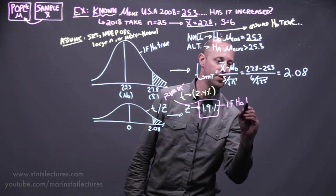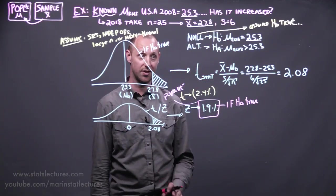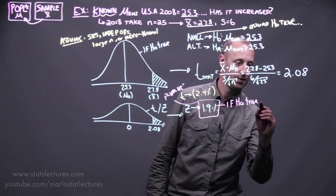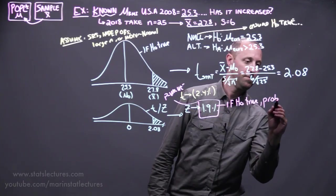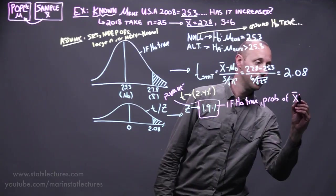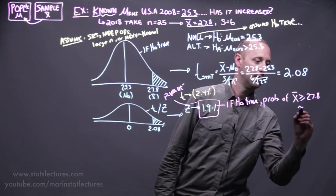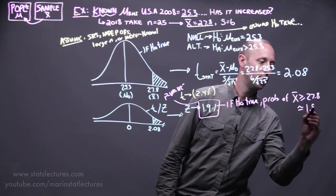So let's write that down. If the null hypothesis is true, if there's been no change from 2008 to 2018, the probability of getting an estimate or a sample mean greater or equal to 27.8 is roughly 1.9%.